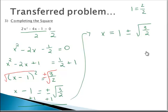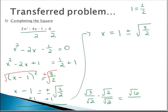This isn't very clean because we still have a radical in the denominator, so let's rationalize. That's the square root of 3 over the square root of 2. We multiply by square root of 2 over square root of 2, and we get square root of 6 over the square root of 4, or the square root of 6 over 2. So x is equal to 1 plus or minus the square root of 6 over 2.